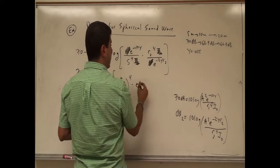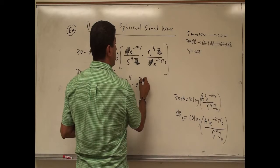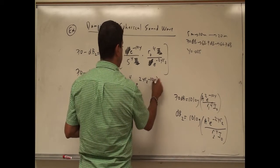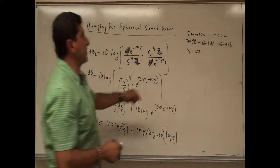Then I can multiply that by E to the, and then I can take this up to the top. I can say 2 gamma R2 minus 10 gamma.